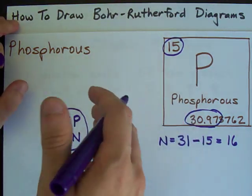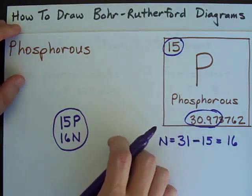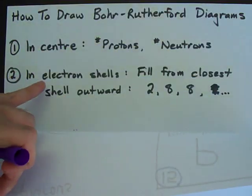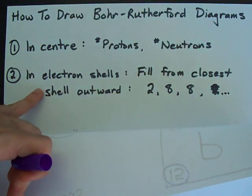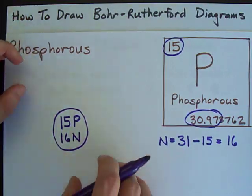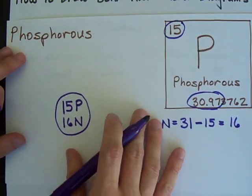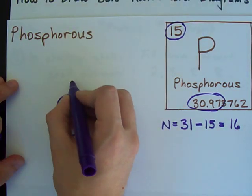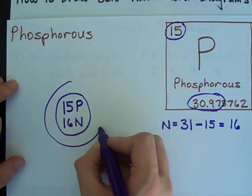The last and most important thing you have to do for a Bohr-Rutherford diagram is put electrons in electron shells. Now there is a small trick to doing this. The first thing you need to do is draw a circle around your nucleus.